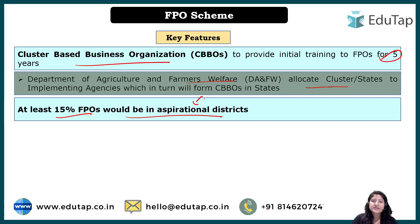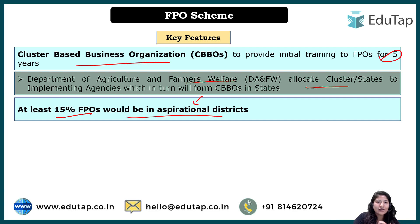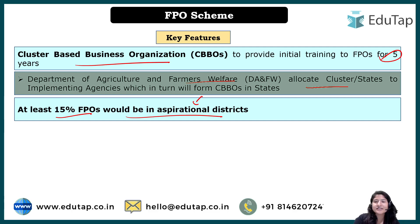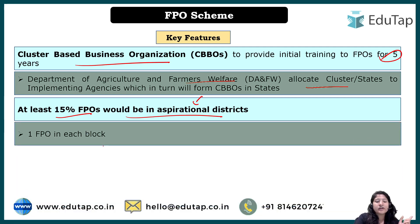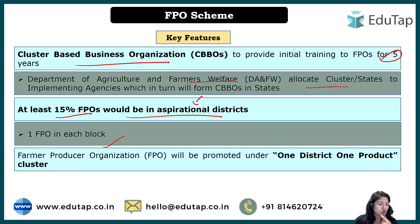At least 15% of FPOs should be from Aspirational Districts — those districts in a state that are not as developed as the rest, which were ignored for a while and now need focused attention to reach the development level of other districts. Additionally, there should be one FPO in each block, so that no block is left without representation. FPOs will also be promoted under the 'One District One Product' cluster approach.